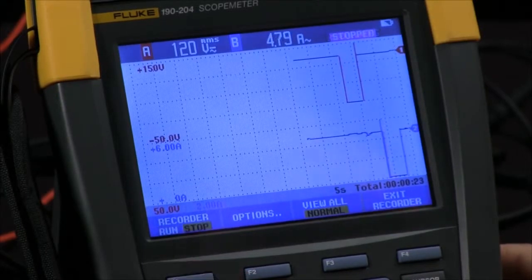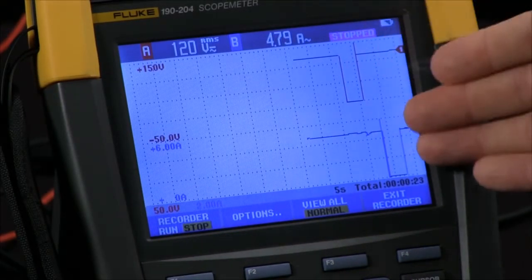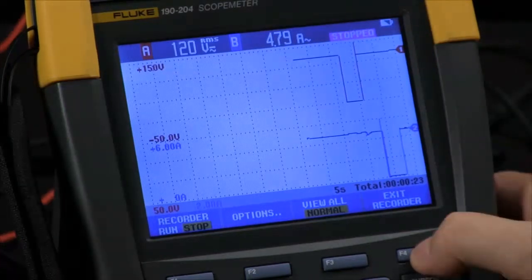Now to look at these I can simply stop the recorder and we can see by the plot line we have clearly identified any faults in the signal.